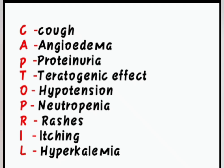'O' stands for hypotension, which may occur following the first dose of ACE inhibitors. 'P' stands for neutropenia, which is rare. 'R' stands for rashes — discontinuation of the drug is not required in rash cases. 'I' stands for loss of taste sensation, that is dysgeusia. 'L' stands for hyperkalemia — in patients receiving ACE inhibitors, there may be a chance of hyperkalemia.